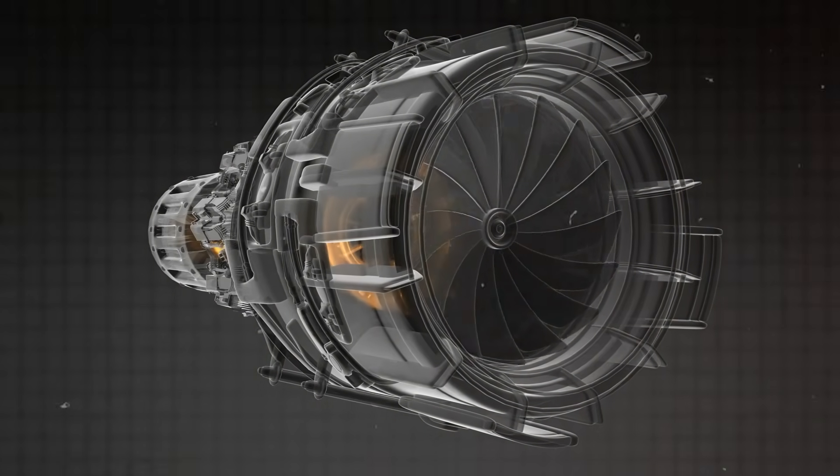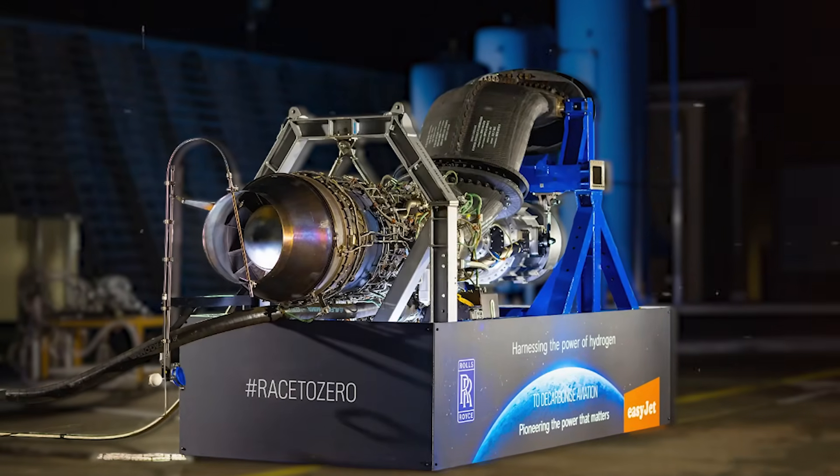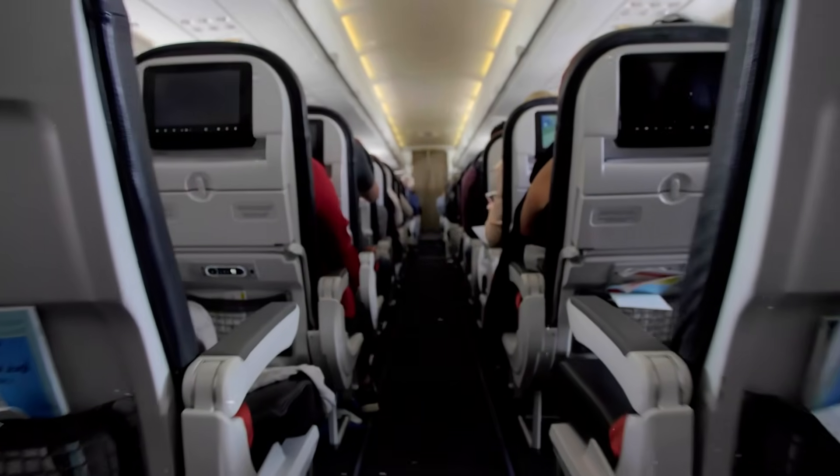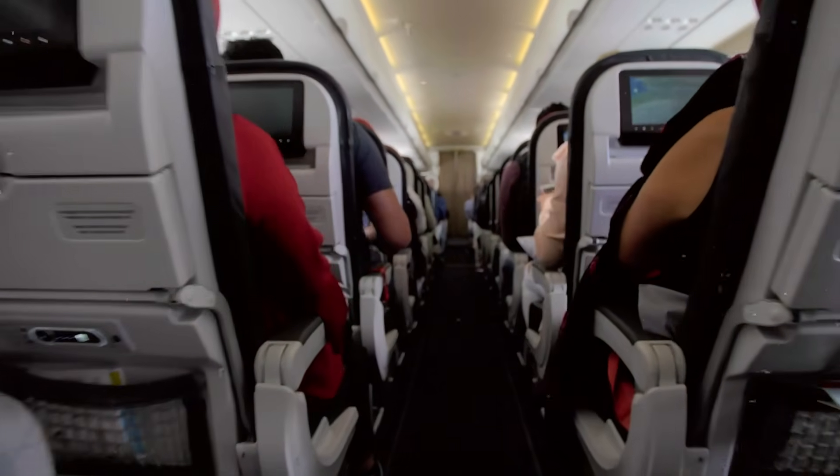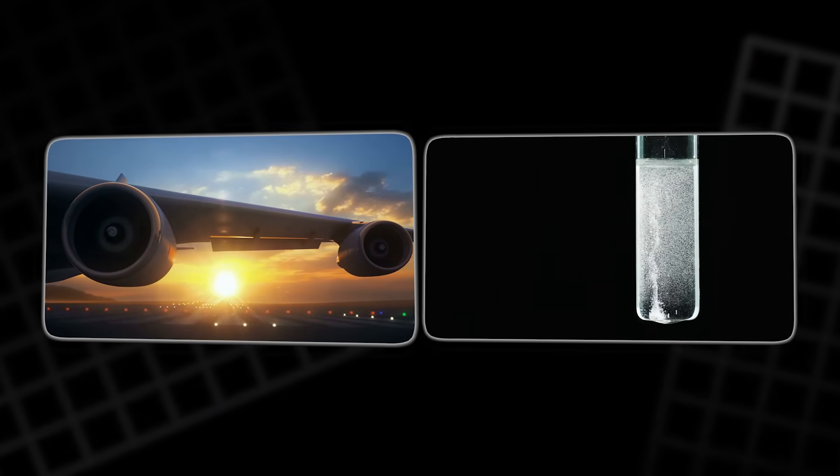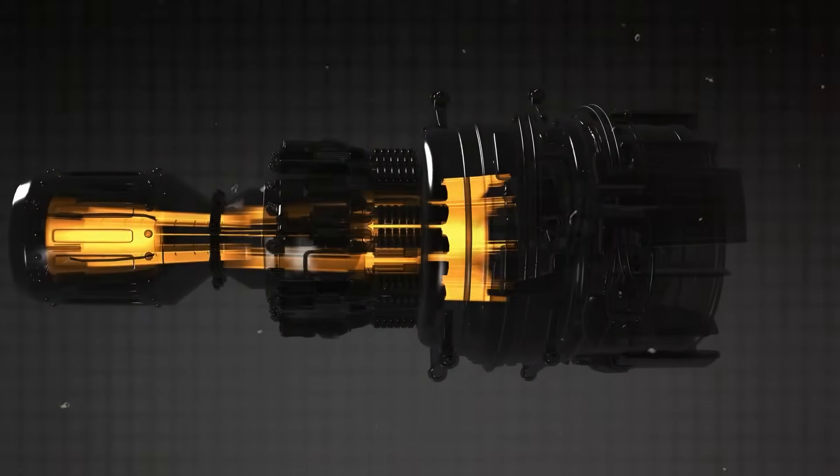This new jet engine is rewriting the future of flight. Rolls-Royce has unveiled the world's first modern hydrogen-powered jet engine, promising to transform air travel forever. Fueled by clean hydrogen produced from renewable wind and tidal power off the Scottish Orkney Islands, this engine aims to cut carbon emissions drastically.